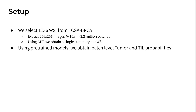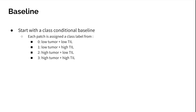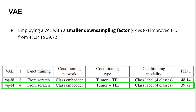To assess the impact of different architectural changes on the FID, we begin with a class-conditional latent diffusion model baseline, exclusively utilizing patch-level tumor and TIL probabilities without incorporating GPT's text summaries. We convert probability values into an ordinal scale using a threshold of 0.5, denoted as low and high, and assign each patch a class label based on its tumor and TIL presence. We find that employing a VAE with a smaller downsampling factor of 4x instead of the default 8x improves the FID from 48 to 39.